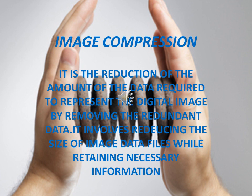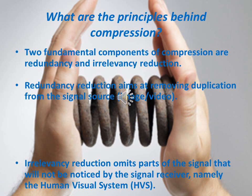Without noticeable loss in quality, there are two main reasons behind the process of image compression: redundancy reduction and relevancy reduction. Redundancy reduction aims at removing duplication from the signal source, and irrelevancy reduction refers to omitting parts of the signal that will not be noticed by the human eye.